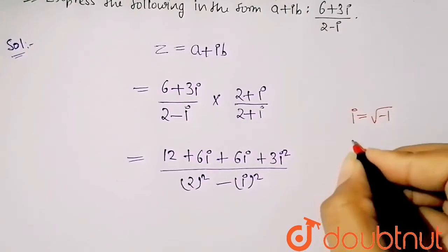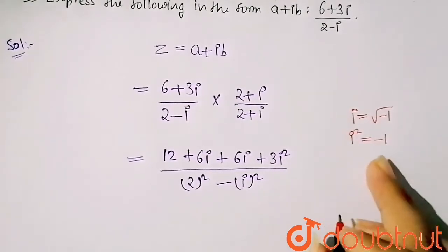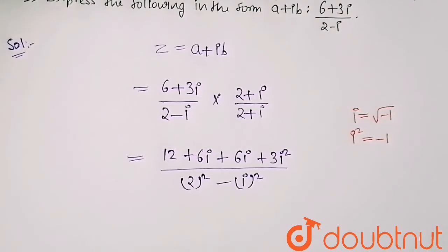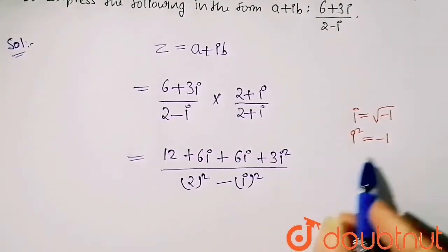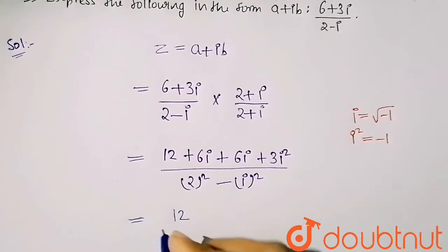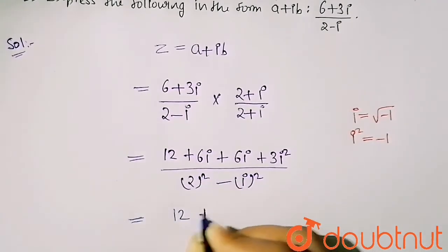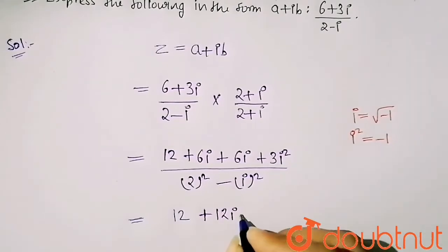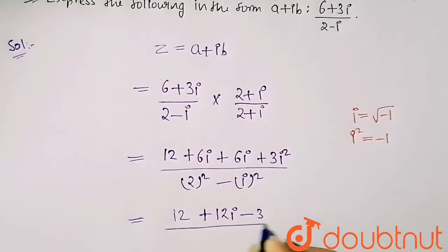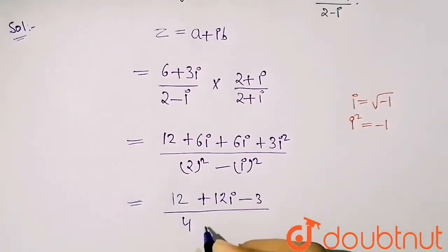Now here we know that iota equals root minus 1 and iota square equals minus 1. So at the place of iota square I will put minus 1. So 12 plus 6 iota plus 6 iota is 12 iota, and this will give me minus 3, upon 2 square is 4 minus minus 1 will be plus 1.